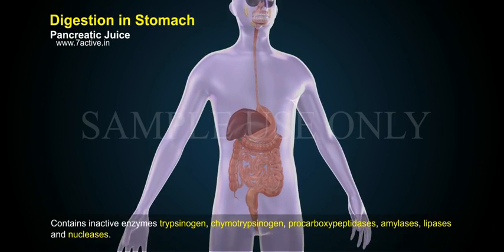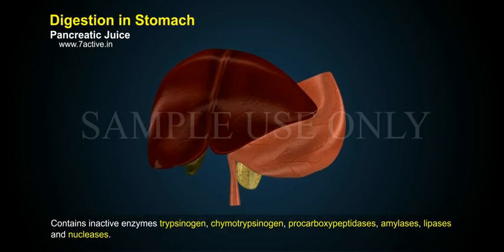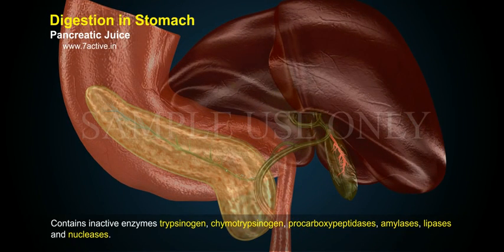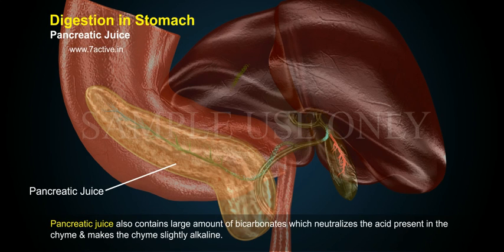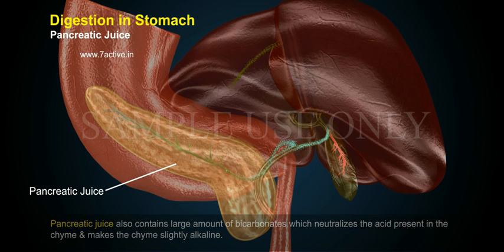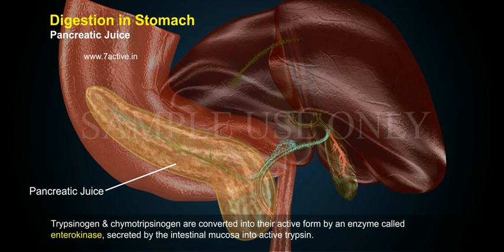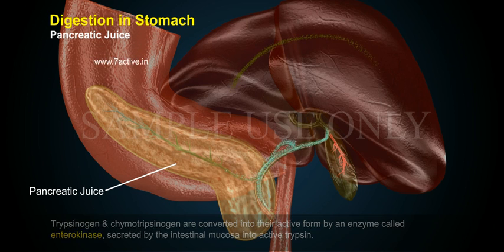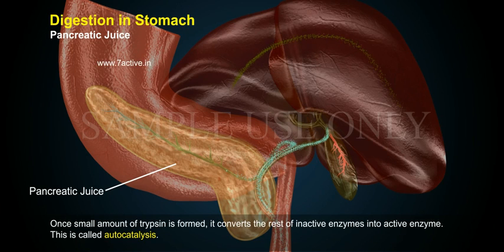Pancreatic juice contains inactive enzymes: trypsinogen, chymotrypsinogen, procarboxypeptidase, amylases, lipases, and nucleases. Pancreatic juice also contains large amounts of bicarbonates which neutralize the acid present in the chyme and make the chyme slightly alkaline. Trypsinogen and chymotrypsinogen are converted into their active form by an enzyme called enterokinase, secreted by the intestinal mucosa, into active trypsin. Once a small amount of trypsin is formed, it converts the rest of the inactive enzymes into active enzymes. This is called autocatalysis.